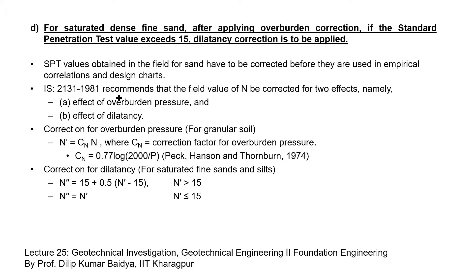IS 2131:1981 recommends two corrections. The first is the effect of overburden pressure. After getting the corrected value for overburden pressure, we need to again correct for the effect of dilatancy. The formula gives N' = C_N × N, where N' is the overburden-corrected value, N is the field SPT value, and C_N is the overburden pressure correction factor. If this N' value is less than or equal to 15, there is no need to apply the dilatancy correction. But if the value of N' is greater than 15, we need to apply the dilatancy correction.